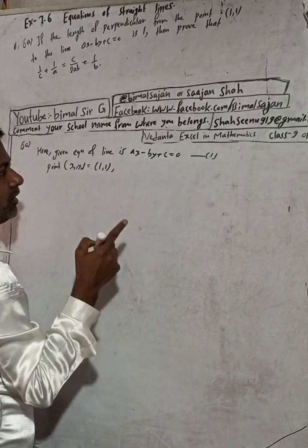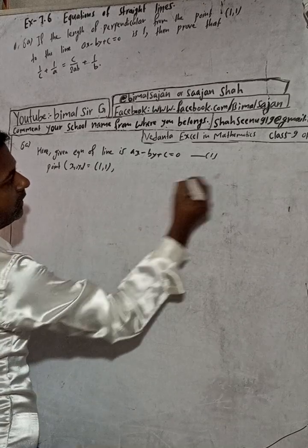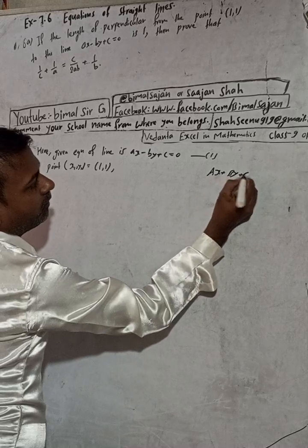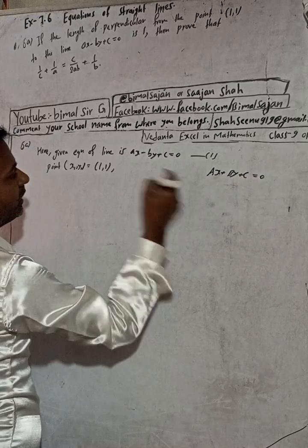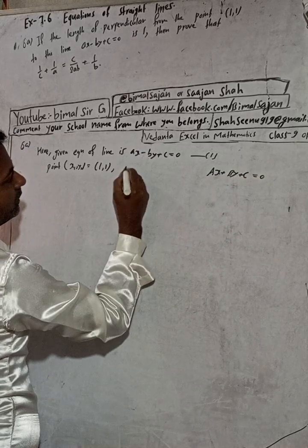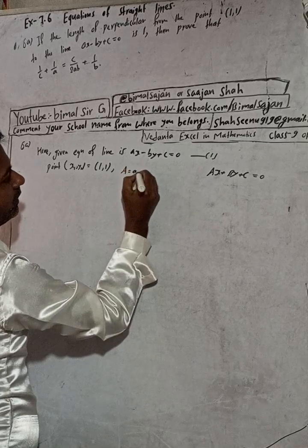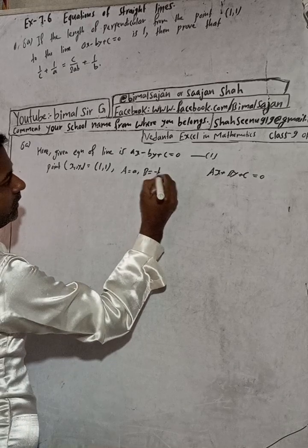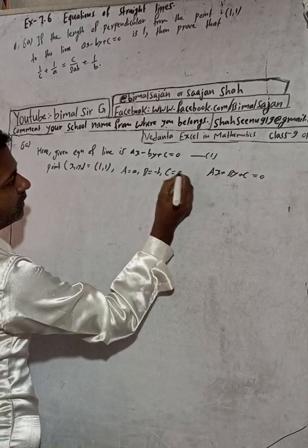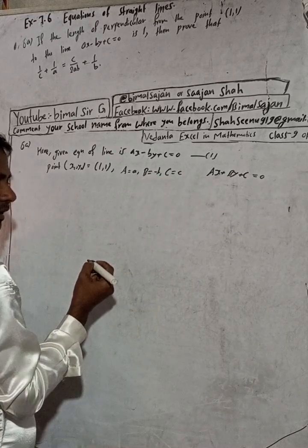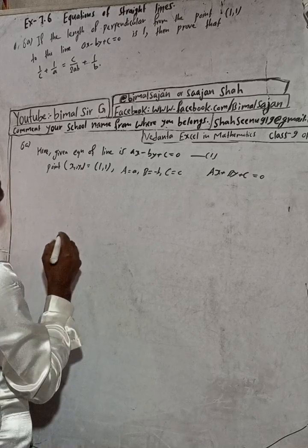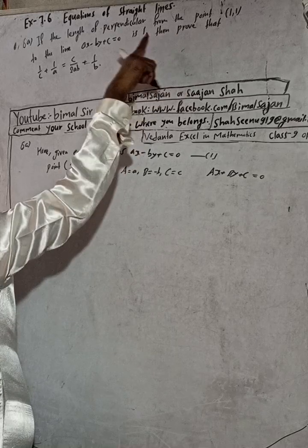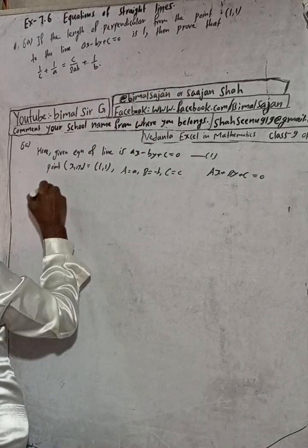This is of the form ax plus by plus c equals 0. So we can write: capital A is equal to small a, capital B is equal to minus b, and capital C is equal to small c. The perpendicular distance from the point (1,1) to the line is given as 1.